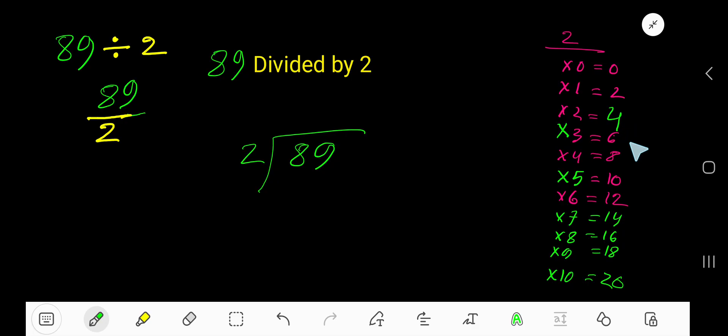4 plus 2 is 6, 6 plus 2 is 8, 8 plus 2 is 10. Right, so this is the easy way to find out the multiplication table of 2. Now divide: 2 goes into 8 how many times?